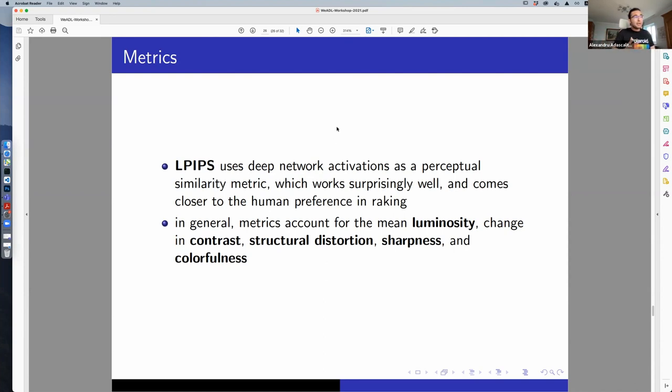In general, those metrics account for luminosity, contrast, structural distortion, sharpness, and colorfulness.